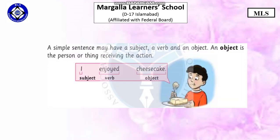The second type is a sentence that may have a subject, a verb, and an object. An object is the person or thing receiving the action. For example, 'I enjoyed cheesecake' — 'I' is the subject, 'enjoyed' is the verb, and 'cheesecake' is the object.